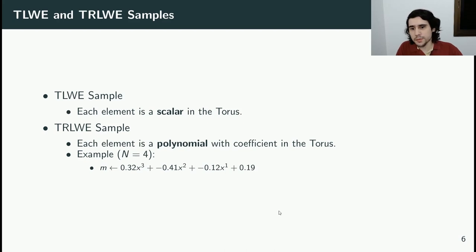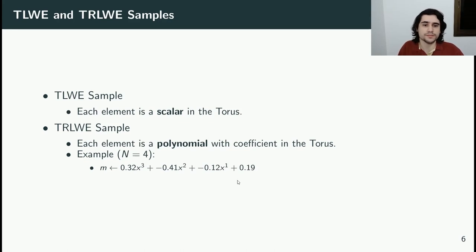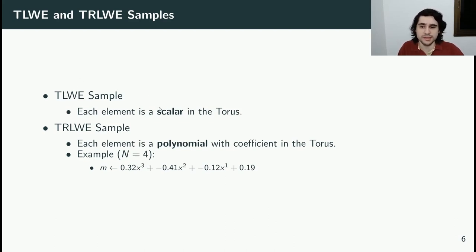The second type of ciphertext in TFHE is the TRLWE sample. It is basically the same thing I just explained, with one major difference: instead of scalars in the torus, each element is a polynomial in the torus with coefficients in the torus. In this presentation, to avoid confusion, I will call TLWE samples scalar samples or scalar ciphertexts, and TRLWE samples polynomial samples or polynomial ciphertexts.